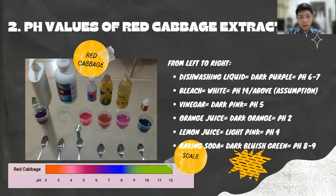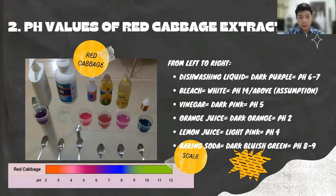For the bleach, the color turned white. Again, assuming the trend from dark to light colors continues, it would have a pH of 14 or above, so it's a very strong alkaline. For vinegar, the color turned dark pink. Based on the scale, it has a pH value of 5, so it's a weak acid.